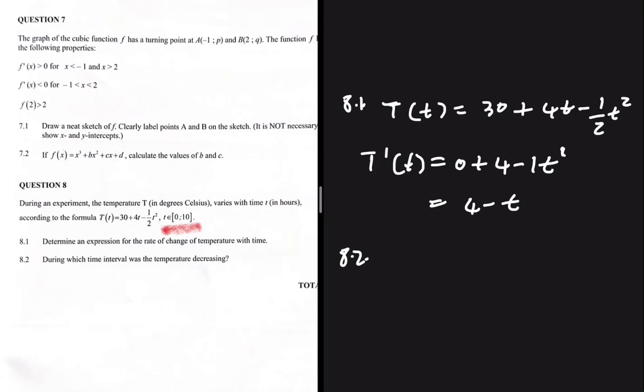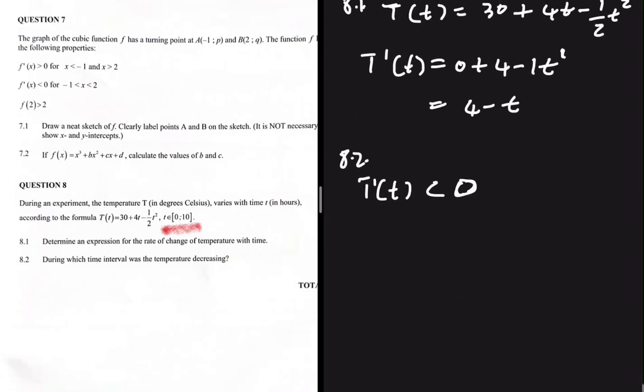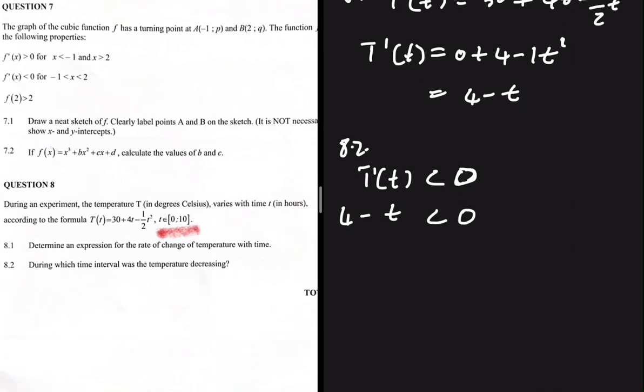The temperature is decreasing when the first derivative is less than 0, when our rate of change is negative, when our graph is sloping down. So the first derivative, we know that it is 4 minus t. This will be less than 0.